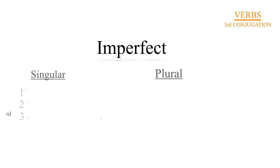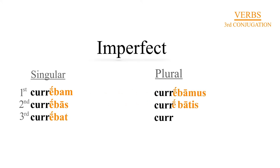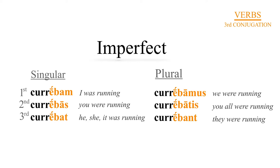Now, turning to the imperfect. And as you can see, the E returns, taking its place between the stem cur and the infix ba, and the personal endings.